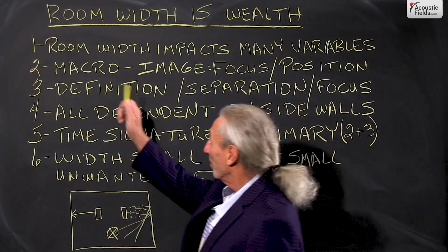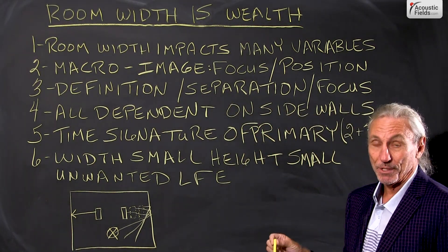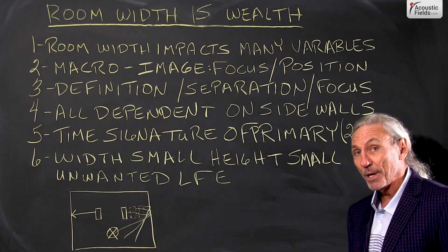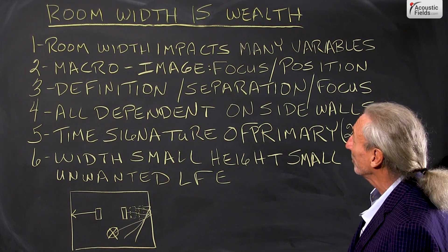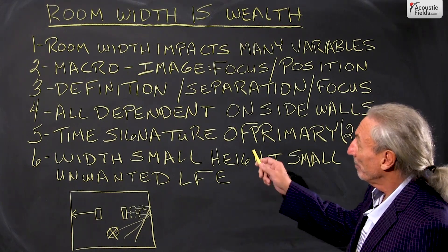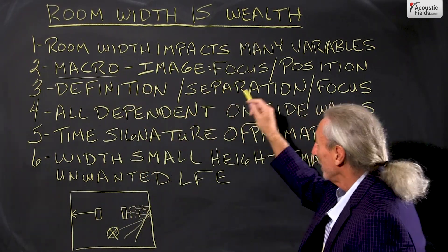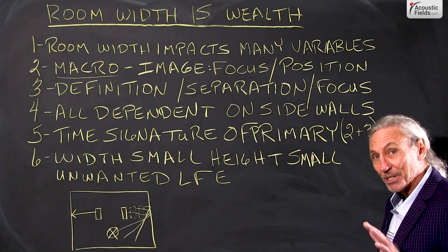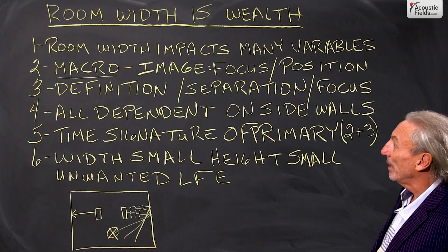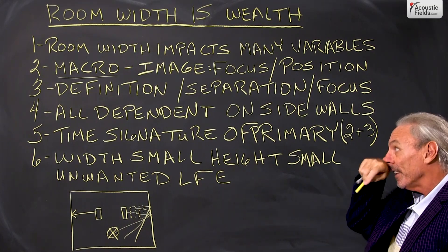The room width really impacts a lot of variables that we use for evaluation, especially in two channel stereo. If we take a big picture look, a macro level view, it's image, focus and position. That's what we're trying to do with the sidewall implications.